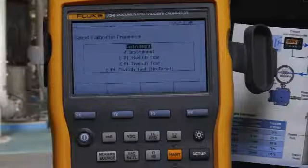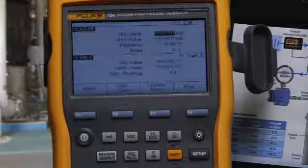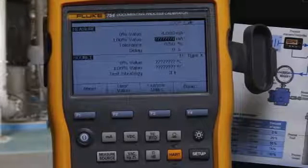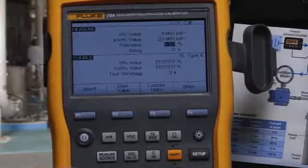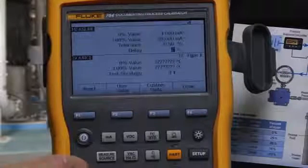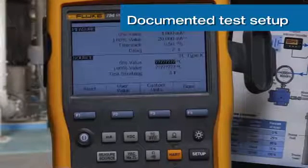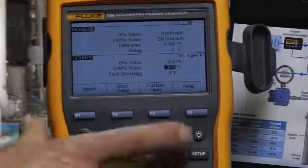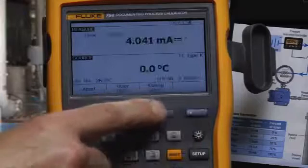Configure what we're going to measure, 4 to 20 milliamps. 0.5 percent. Set settling delay and source 0 to 300 degrees C and a three-point test.